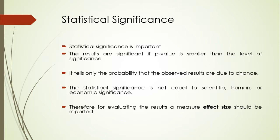Regarding statistical significance, we make decisions on the basis of the p-value. The smaller the p-value, the more likely the results are statistically significant. Statistical significance tells only the probability that the observed results are due to chance.